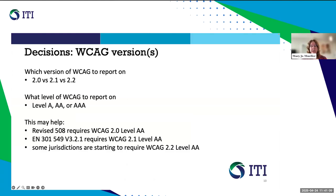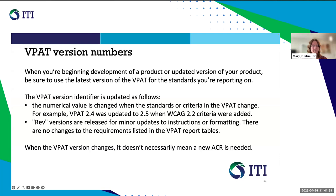Early on in your product development, you'll need to decide which WCAG version you want to be testing and reporting on in your ACR, and what WCAG levels you'll be testing against — level A, AA, AAA, or a combination such as level A and AA. Note that the revised Section 508 requires WCAG 2.0 at level AA, while EN 301 549 requires WCAG 2.1 at the AA level. Other jurisdictions, like the United Kingdom, are starting to require WCAG 2.2 at level AA. Be sure to check the ITI website for the latest version of the VPAT and for the edition that you want to report on.